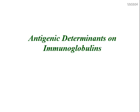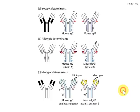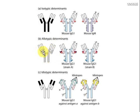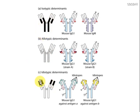In this video we are going to learn about antigenic determinants on immunoglobulins. There are three types of antigenic determinants on antibodies: isotypic determinants, which are located in the constant region of the antibody molecule; allotypic determinants, which are also present in the constant region; and idiotypic determinants, which are present in the variable region of the antibody molecule.